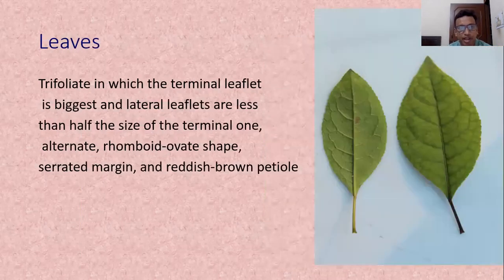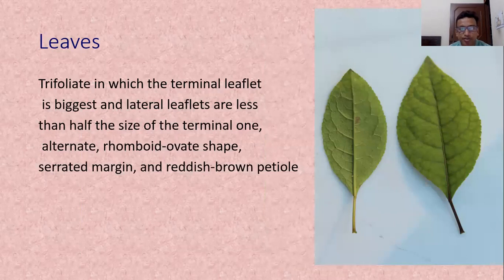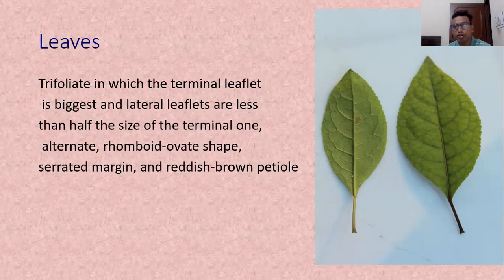The leaves are trifoliate and alternate. The terminal leaflet is the biggest in comparison to the lateral leaflets, which are half in size. The leaves are alternate, rhomboid to ovoid-shaped with serrated margin, manually serrated margin. The petiole is reddish brown in color. The dorsal and ventral side of this leaf is shown in the slide.